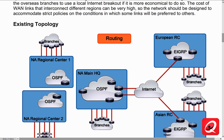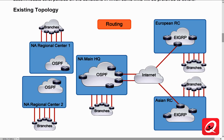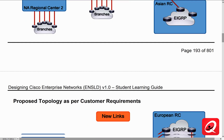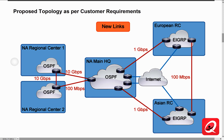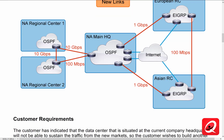Very similar to what we talked about at the end of section number six. We have our North America Regional Center number one with various branches running OSPF, North America Regional Center two with various branches running OSPF, our North America main headquarters with various branches, and then our European Regional Centers and our Asian Regional Centers with branches as well. The proposed topology per the customer requirements is to have 10 gig connections interconnecting our North America regional and main headquarters, 1 gig connections going to the European headquarters, 100 meg connections between Asia and Europe, as well as an internet overlay that allows us to communicate between our main headquarters and our regional offices.